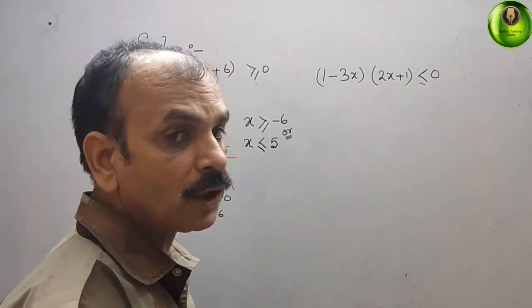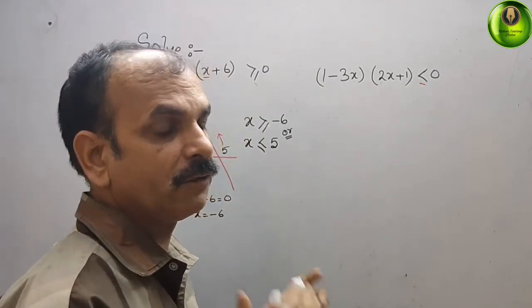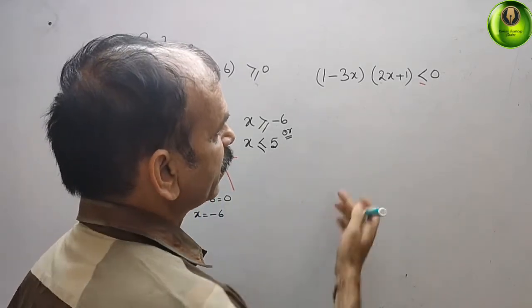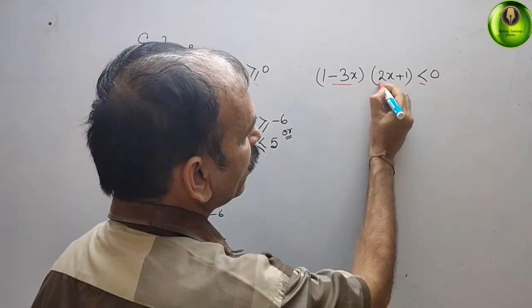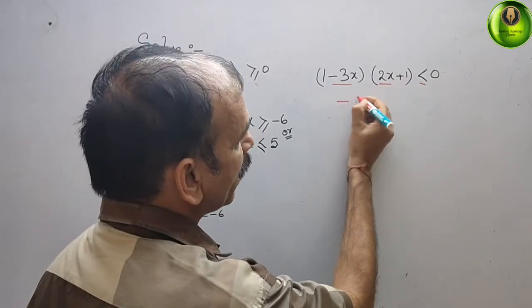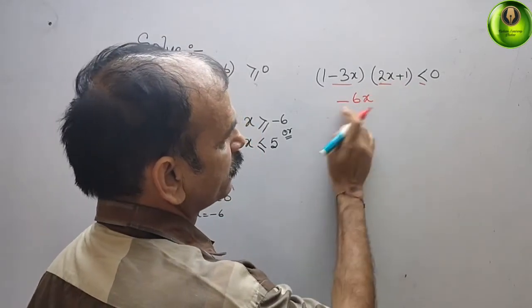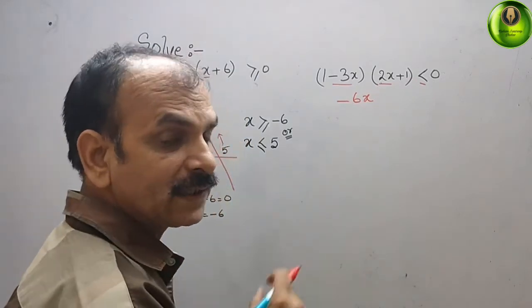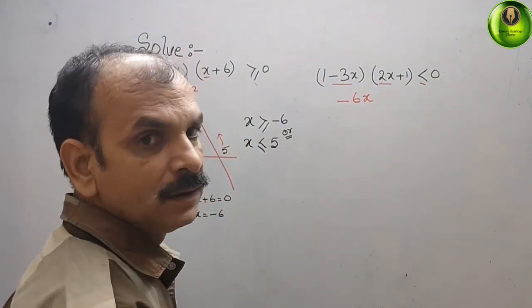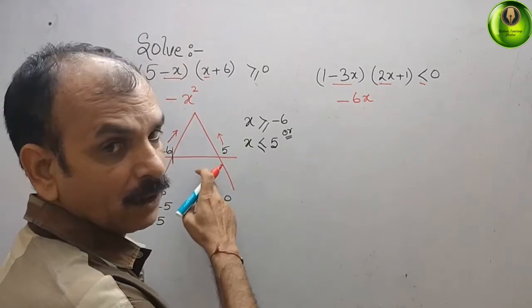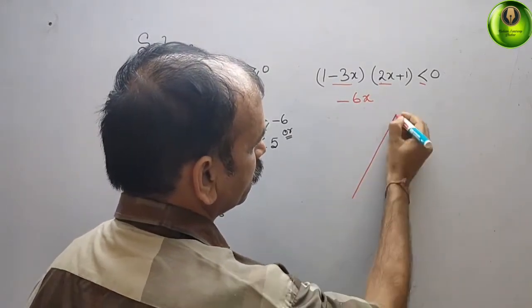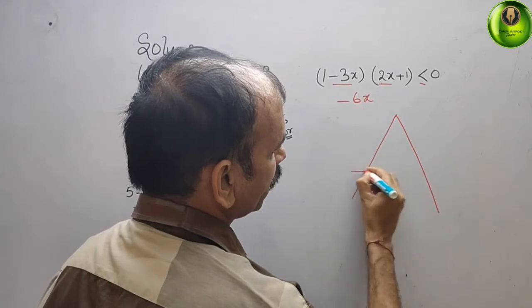For the second equation, we check again whether the quadratic is positive or negative. You can see minus 3x and 2x — if you multiply them you get minus 6x squared — that means again we get the same downward-opening graph with a maximum peak.